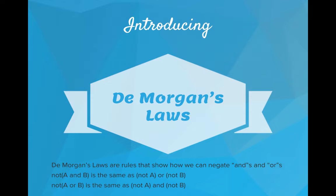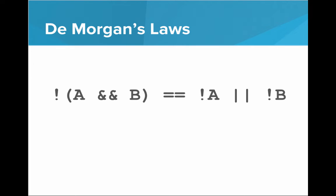DeMorgan's Laws are rules that show how we can negate ANDs and ORs. According to DeMorgan, NOT (A AND B) is the same thing as saying NOT A OR NOT B. In code, not A and B is equivalent to not A or not B. You can think of it as distributing the NOT throughout the statement: negate A to get NOT A, negate the AND to get OR, and negate B to get NOT B.